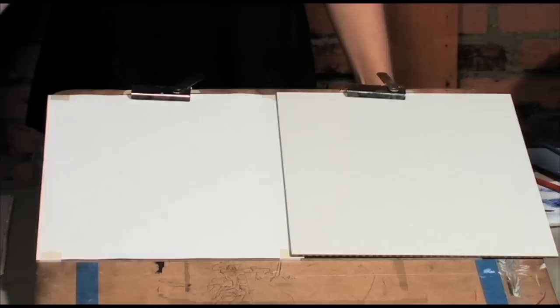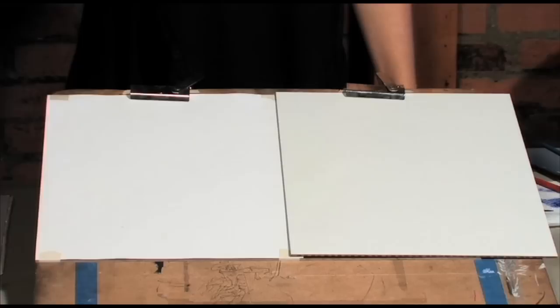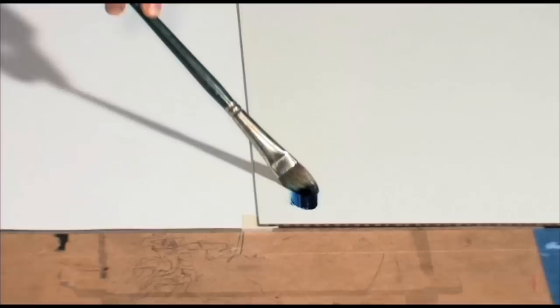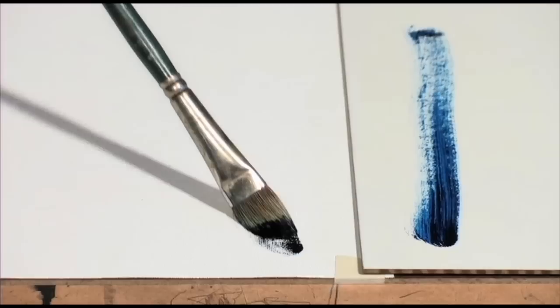So just to show a couple different marks, I'm using a filbert bristle. Not too much paint on the brush, not really loaded up, and this is basically dragging a brushstroke across a smooth surface. Same amount of paint on the canvas, dragging the brushstroke across the rough surface.